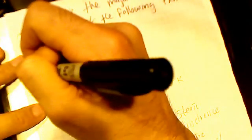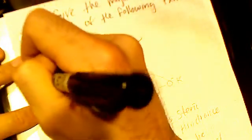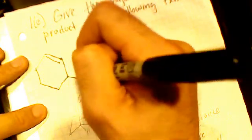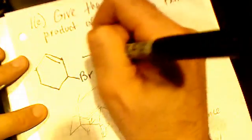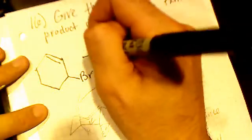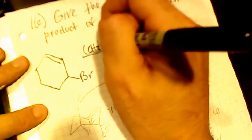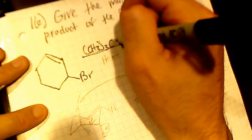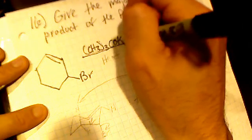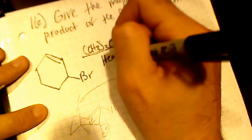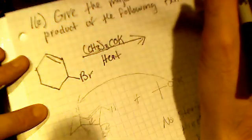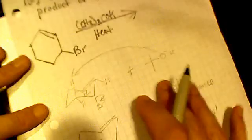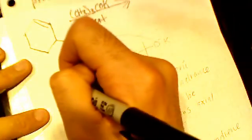Here they give us a cyclohexene molecule with a bromine attached, and we're treating it with the bulky base potassium tert-butoxide in heat. So the first thing we should do is write this in chair form.